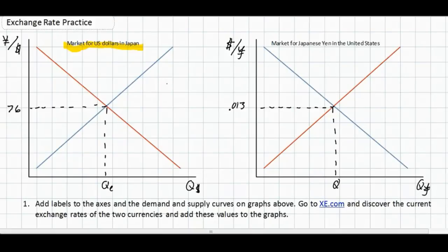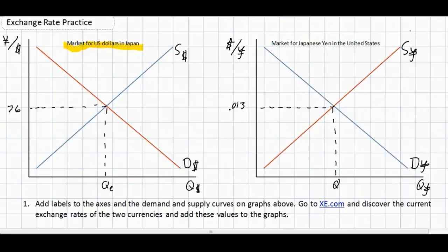Our demand and supply curves need labels as well. In the dollar market we'll call this the demand for dollars and the supply of dollars. In the yen market we have the demand for yen in the United States and the supply of yen in the United States. Now we've got two correctly labeled graphs. The price of one US dollar in Japan is 76 Japanese yen, and the price of one yen in the United States is $0.013 US dollars.